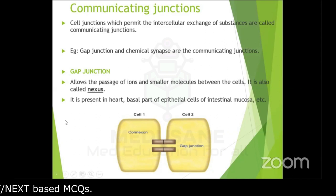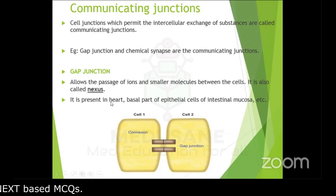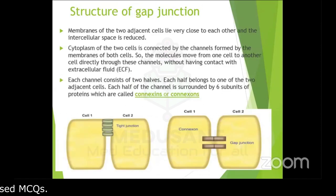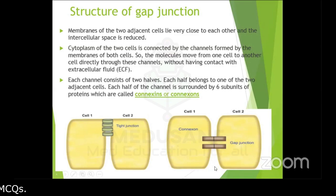Gap junctions are present in the heart and in the basal part of epithelial cells of the intestinal mucosa. If you remember, occluding junctions were present at the apical margin — communicating junctions are present in the basal part. The membranes of two adjacent cells lie very close to each other, and the intercellular space is reduced to around 2 to 3 nanometers.